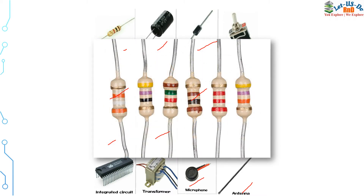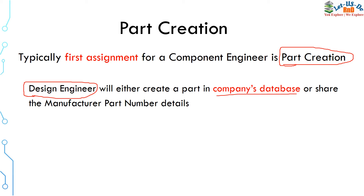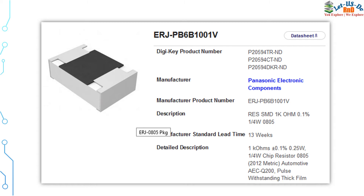We will see the example for part creation for a resistor. Typically the first assignment for a component engineer is to create a part in the company's database. The design engineer working on product development will either create a part number in the company's database, or sometimes only provide the manufacturer part number or manufacturer part description. The responsibility of the component engineer is to verify all the details and approve them in the company's database. Today we are going to take the example of Panasonic Electronic Components part number ERJ-PB6B1001.